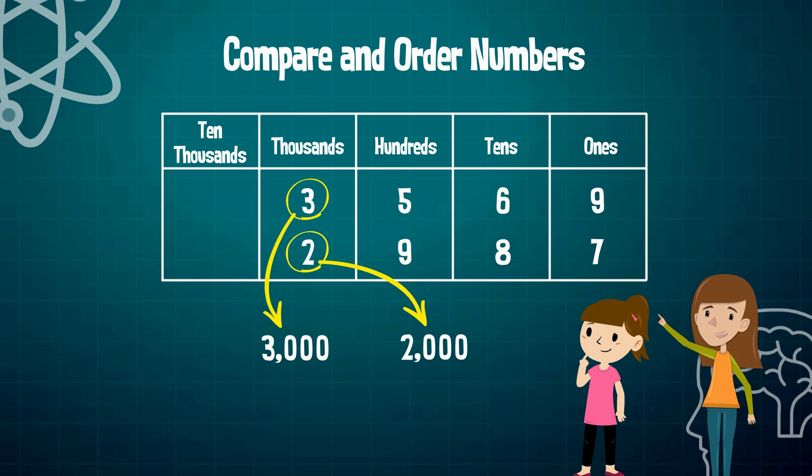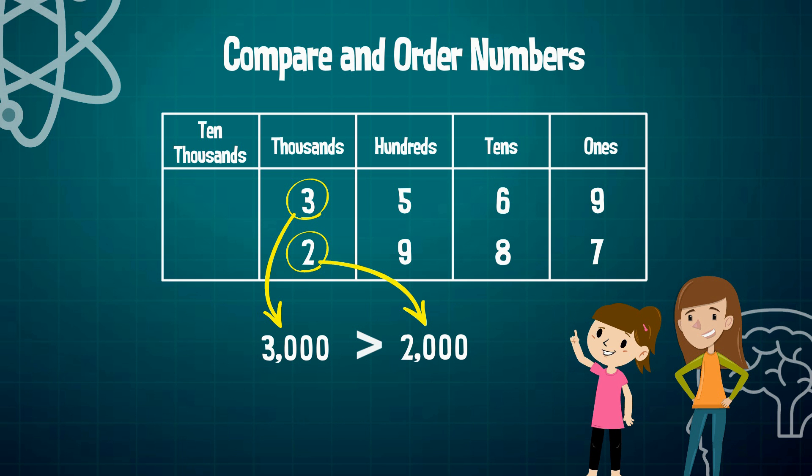So I have a question for you. What number do you think is greater, 3569 or 2987? Well, since I know that 3000 is greater than 2000, the number 3569 has to be the bigger number.